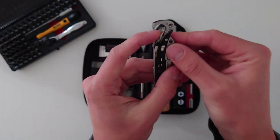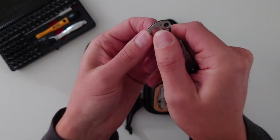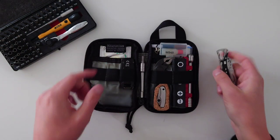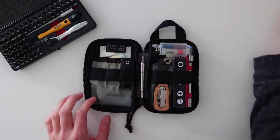It does also, on this little hook, have a bottle opener, which is handy to have but there's about five different bottle openers inside here anyway.